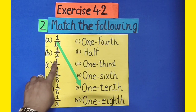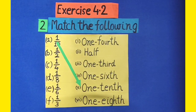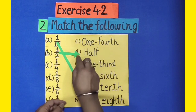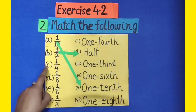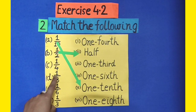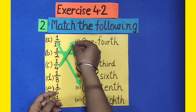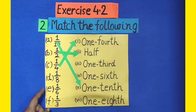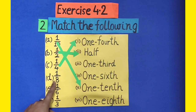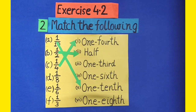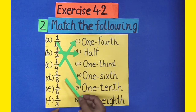Part B is 1 by 2. It can be written as half. Part C is 1 by 4. In words, it can be written as 1 fourth. Part D is 1 by 8. In words, it can be written as 1 eighth. Let's match part D with part 6.